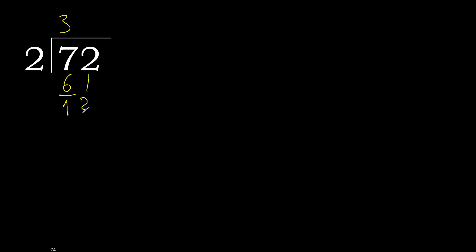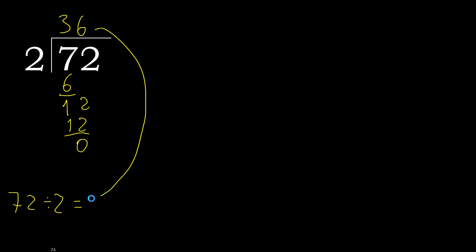Next: 12. 2 multiplied by 6 is 12 — is not greater. 12 minus 12 is 0. There is no remainder, therefore finish it: 72 divided by 2 is 36.